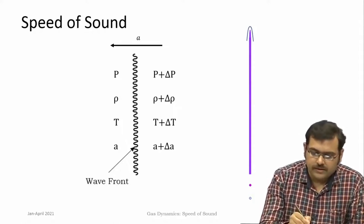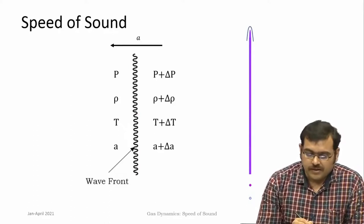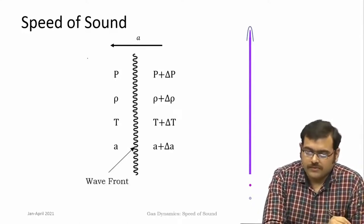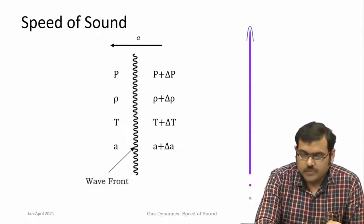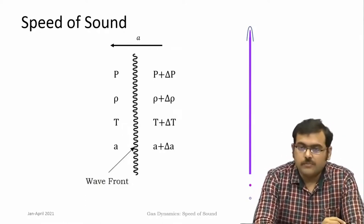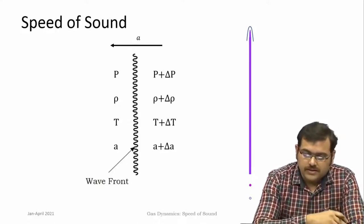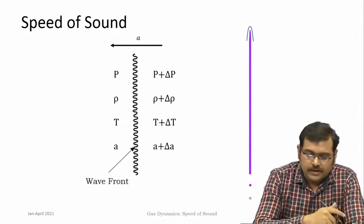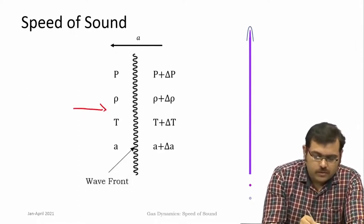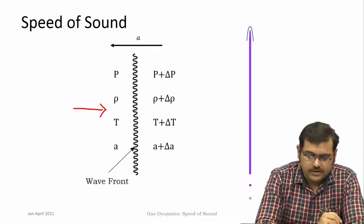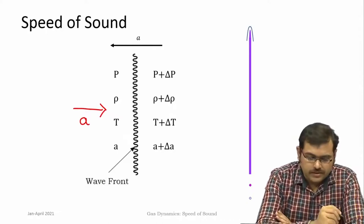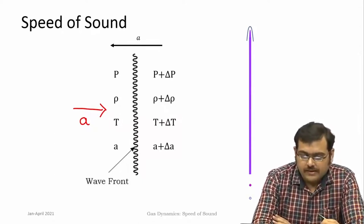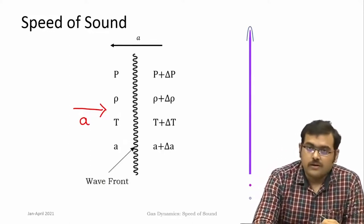This wavy line represents the wave front of the sound as it is traveling from right to left. In order to apply this, we use the principle that if the body is moving or these waves are moving with uniform velocity 'a', then you can always transform the coordinates or impose an opposite velocity in order to make the wave front stationary. So you can give a velocity 'a' going from left to right — if you impose that, then this wave front can be made stationary and the steady flow equations can be applied on this wave front.